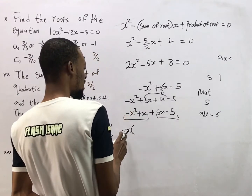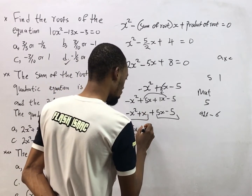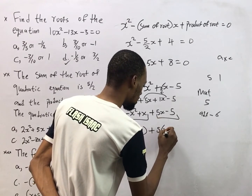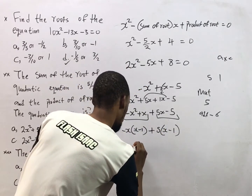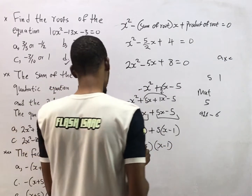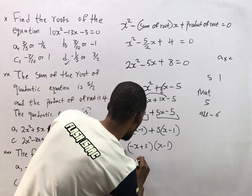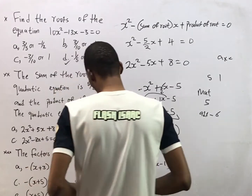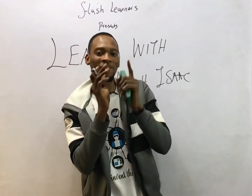Now grouping: from the first two terms, negative s squared plus 5s, we factor out negative s to get negative s times (s minus 5). From the last two terms, s minus 5, we factor out 1 to get (s minus 5). So we have (negative s plus 5)(s minus 1), which can also be written as (5 minus s)(s minus 1). This matches option B, which is the correct answer.